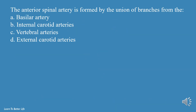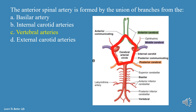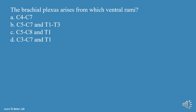The anterior spinal artery is formed by the union of branches from the: a. basilar artery, b. internal carotid arteries, c. vertebral arteries, d. external carotid arteries. The answer is c, vertebral arteries.